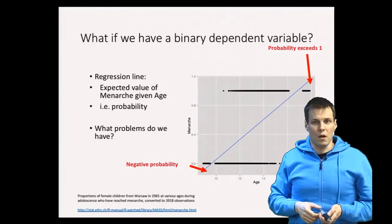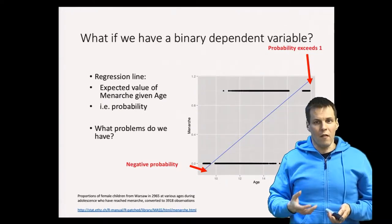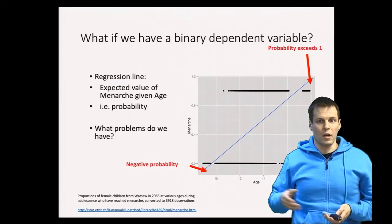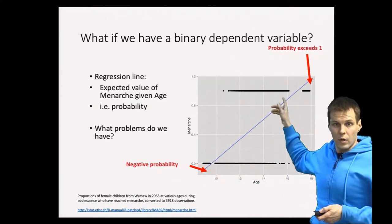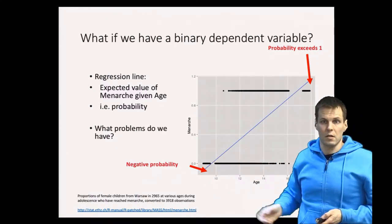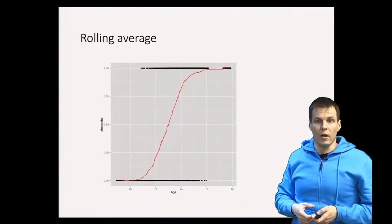One better alternative is to start discovering better alternatives. We need to think about what the relationship is like, and we can do a non-parametric analysis. For example, we take a rolling average from the data.